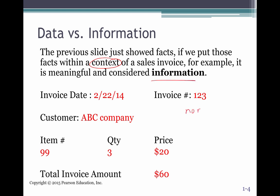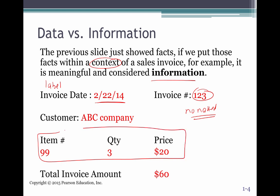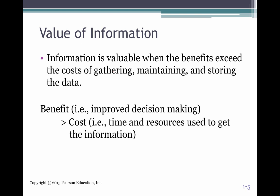This is where we want no naked numbers. We want all numbers in a spreadsheet to have labels. So these labels are what take data and make them into information. Now this date you actually know is the invoice date. This 123 is an invoice number. It looks like we're purchasing some items — we have 99 as the item number, the quantity, and the price to get our totals. We need numbers and data to have labels to be able to make it information.